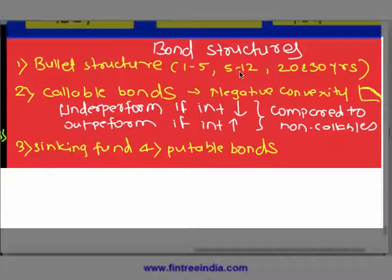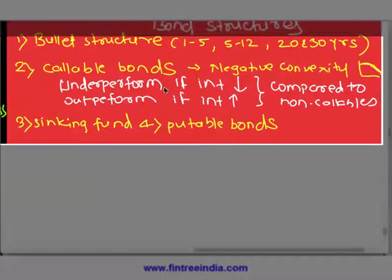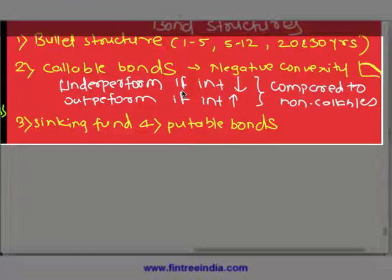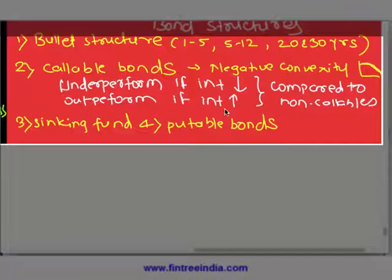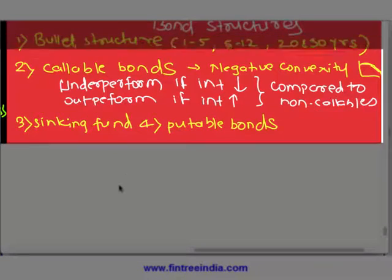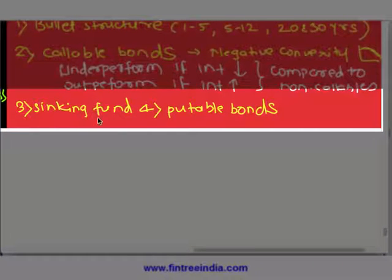Then bond structures: bullet structures — short term is one to five years, medium is five to twelve years, long term is twenty to thirty years. Callable bonds will exhibit negative convexity. If interest rates are going to go down, callable bonds will underperform. If interest rates are going to go up, callable bonds will outperform compared to a regular non-callable bond.